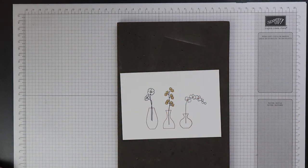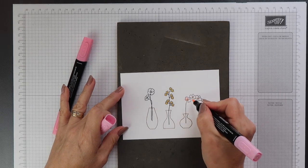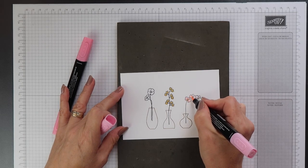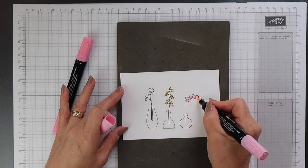For the flower on the right I'm going to use my Flirty Flamingo Stampin' Blends. So again I'll start with the light and then I'll go in with the dark just at the base of each petal again.